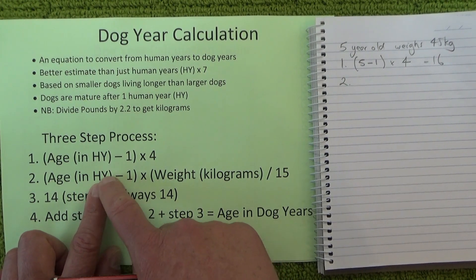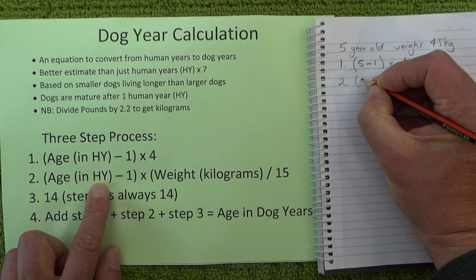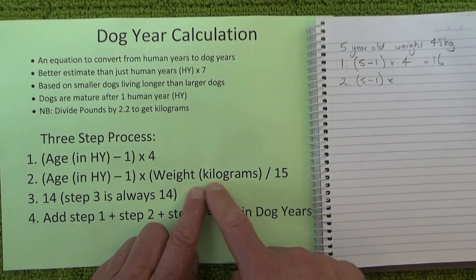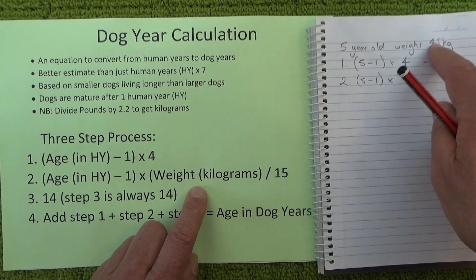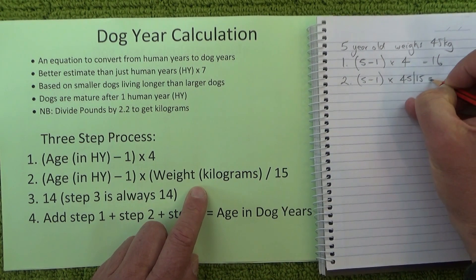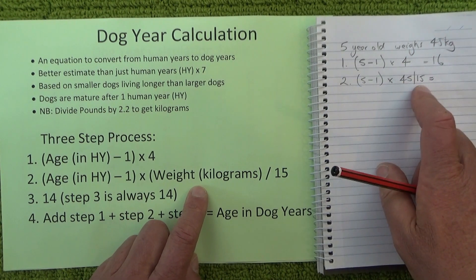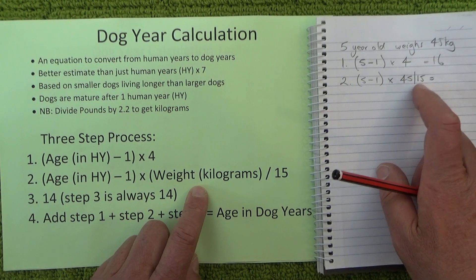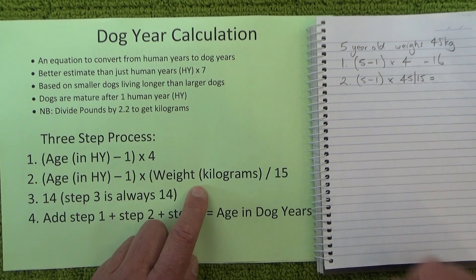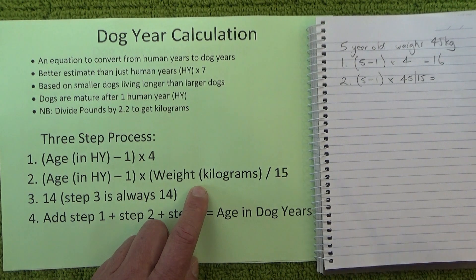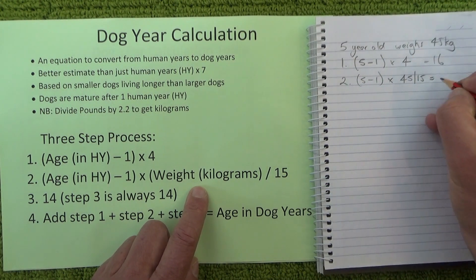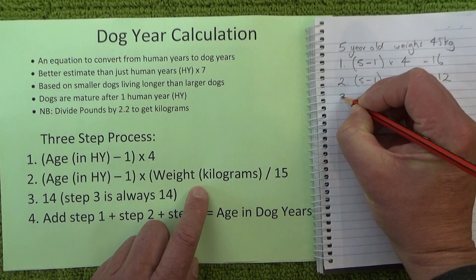The second step is we do the same thing again—years minus one—but this time we multiply by the weight in kilos divided by 15. So it's 45 divided by 15. You can do that in your head: 45 divided by 15 is 3. So five minus one is four, four times three is twelve.